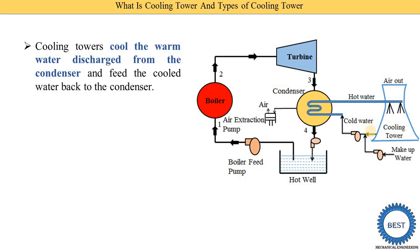This hot water is cooled by using air. Air is supplied from the lower part, the base of the cooling tower. By using this air, the temperature of the water is reduced. Cold water is then collected at the base of the cooling tower and is again supplied back to the condensers.